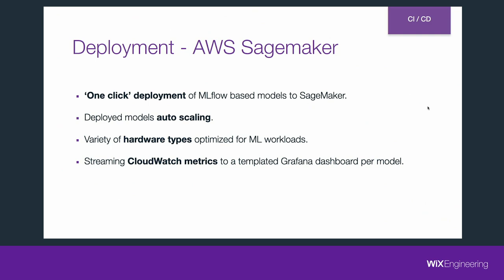What are the advantages we get from SageMaker? First, MLflow plays very well with it, enabling one-click deployment of MLflow-based models to SageMaker. Second, auto-scaling policies for deployed models based on throughput, latency, hardware utilization, and more. Third, we can choose specific hardware types optimized for ML inference workloads. And fourth, we use the standard CloudWatch metrics system and stream the logs into our own templated Grafana dashboards per model, which look like this.